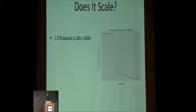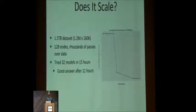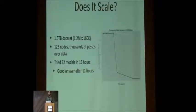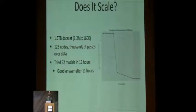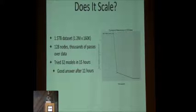We then tried to scale this up just to see if it worked, and in short, it does. This dataset is an order of magnitude bigger — over a terabyte, a similar dataset but much larger. Using a distributed cluster with 128 nodes and doing thousands of passes over the data, we get a good answer after 11 hours using our optimized approach. Doing this with naive grid search is essentially infeasible given the scaling results we saw.